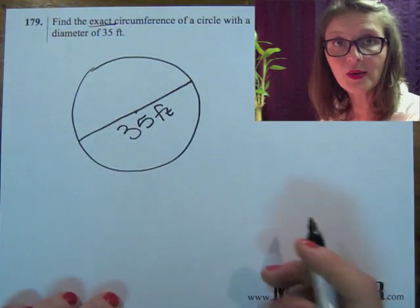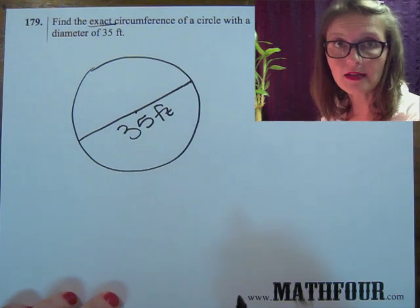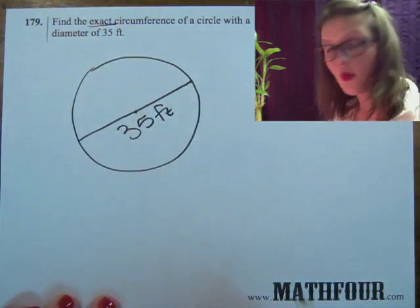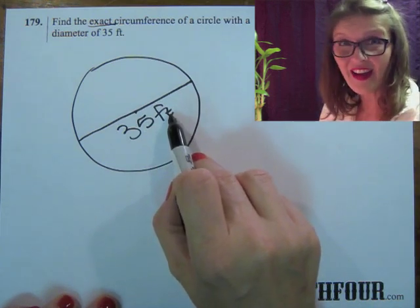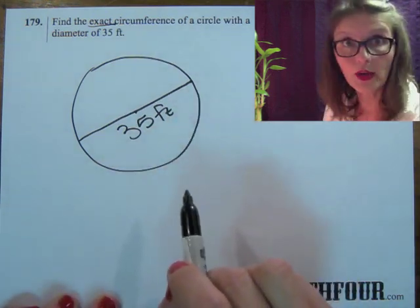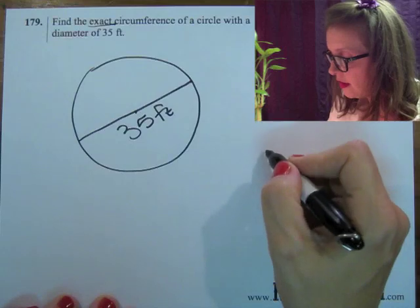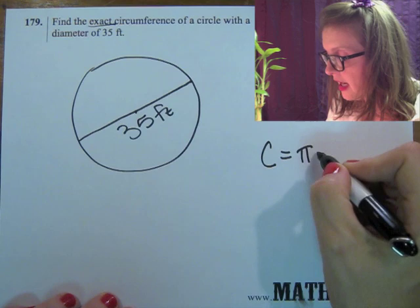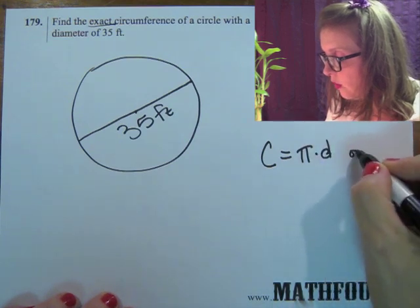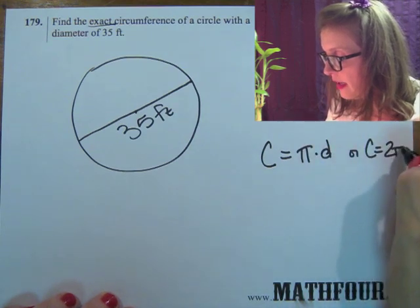The thing is though, that a lot of times we work in radiuses. So let's look at what formula we need and then we can determine, are we going to need the radius, which is half that, or the diameter, which is all the way across. Our circumference formula is equal to pi times D or 2 pi R.